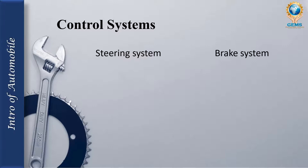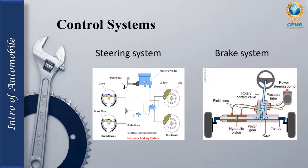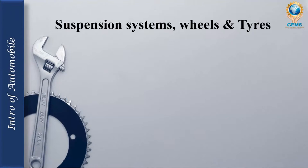In the control systems chapter, there are two types: steering system and brake system. For the brake system, we will see a hydraulic braking system image and learn about hydraulic, pneumatic, and manual brakes. For the steering system, we will see power steering pump, pressure tube, rack and pinion gear, and related components.